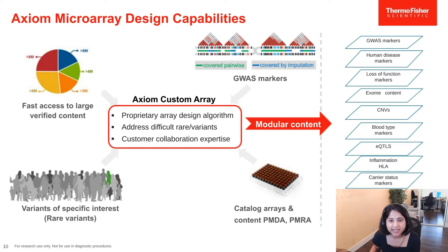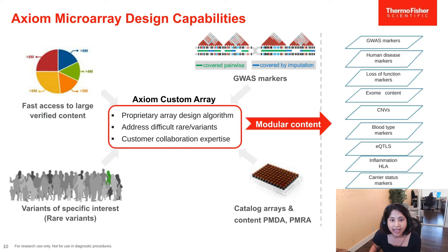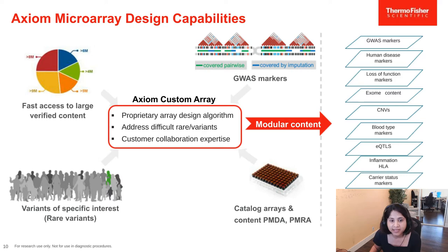What differentiates Axiom microarrays is content customization to meet diverse research needs. Using proprietary array design and data analysis algorithms, Axiom arrays can address even the most difficult engraved markers. We have an imputation design pipeline that can optimally select markers from next-gen sequencing data to provide high accuracy and coverage for the population of interest. We also have a proprietary database of 11 million markers that have been lab-tested, ensuring very high quality. We offer a modular design where customers can start from catalog pre-made arrays or customize content representing their target population.